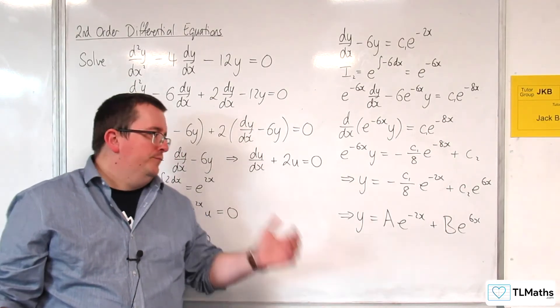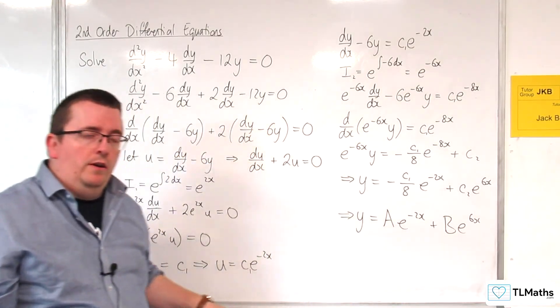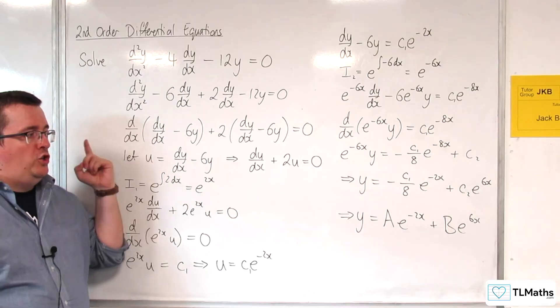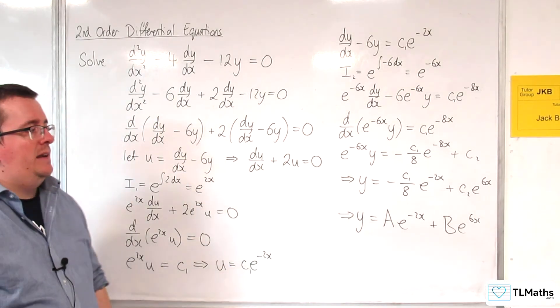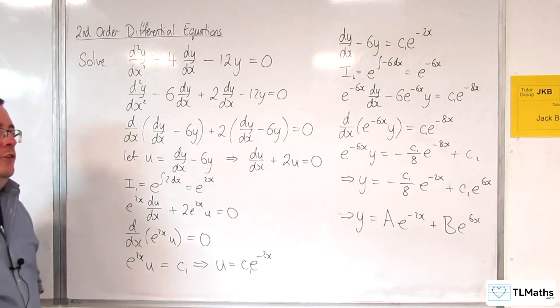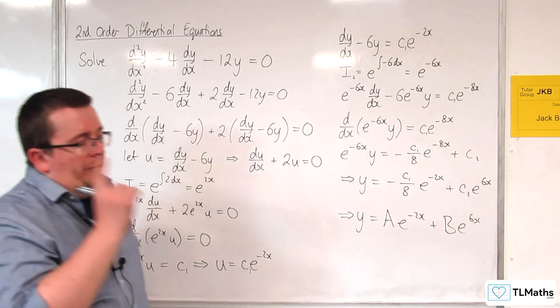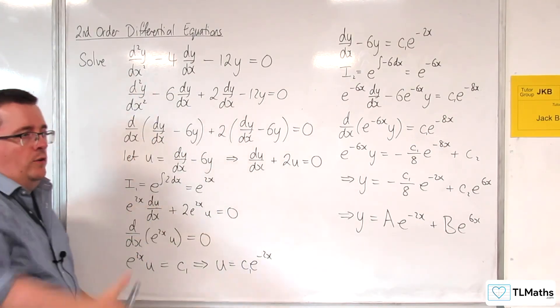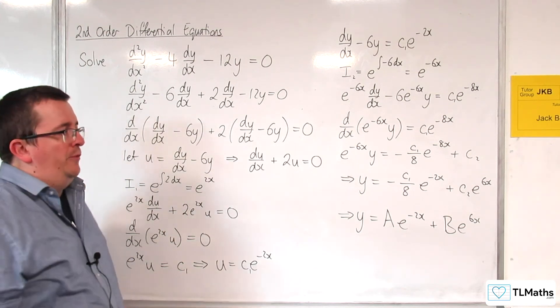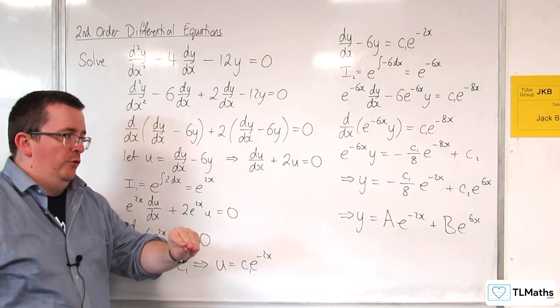Now, that is my general solution. It's a second order differential equation that we started with, and so there are two unknowns, A and B. So I would need two pieces of information in order to work out A and B. The second point is that this method is quite convoluted. It's quite a few steps involved. So good job that we won't have to use this method going forward.